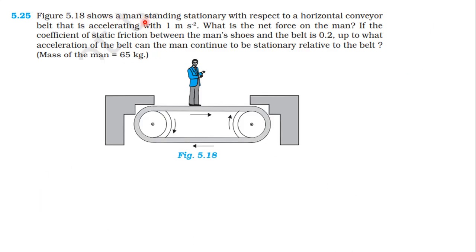Figure 5.18 shows a man standing stationary with respect to a horizontal conveyor belt accelerating at 1 m/s². What is the net force on the man? The belt moves relative to the man, so static friction acts on the man in the direction of belt's motion. This static friction is the net force: F = ma = mass × 1 m/s².